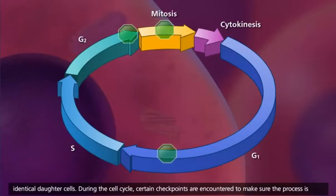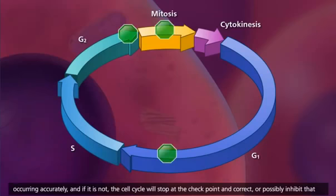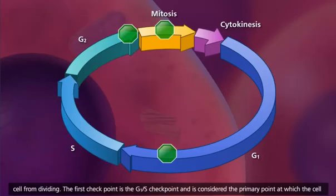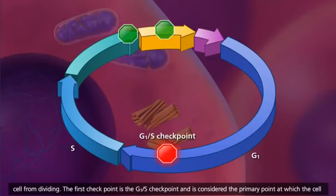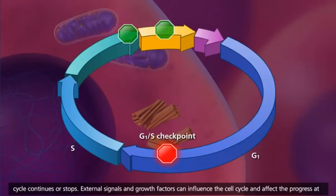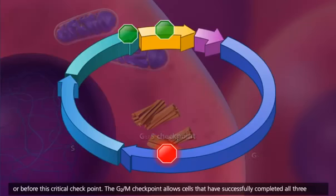During the cell cycle, certain checkpoints are encountered to make sure the process is occurring accurately. And if it is not, the cell cycle will stop at the checkpoint and correct, or possibly inhibit that cell from dividing. The first checkpoint is the G1S checkpoint, and is considered the primary point at which the cell cycle continues or stops. External signals and growth factors can influence the cell cycle and affect the progress at or before this critical checkpoint.